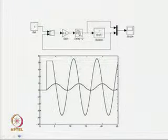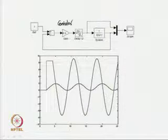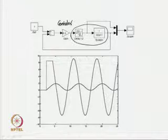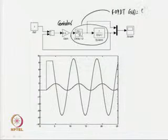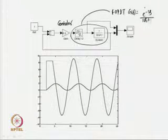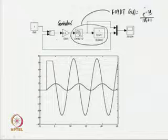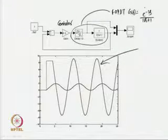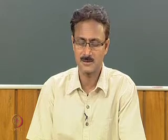Consider the closed loop system subjected to a gain controller. The gain of the controller is 8.5 and the process is the first order plus dead time process with transfer function e^(-2s) / (10s + 1). When this process is subjected to a gain controller with gain 8.5, the output becomes oscillatory. When the gain is lower, the output becomes stable, and when increased further, the output becomes unstable or unbounded.